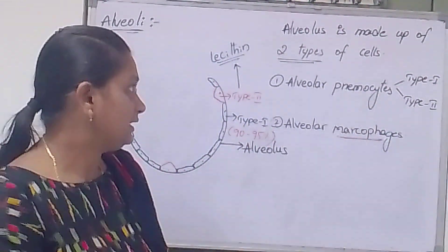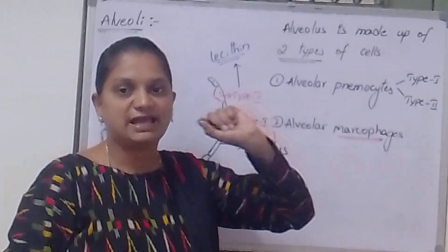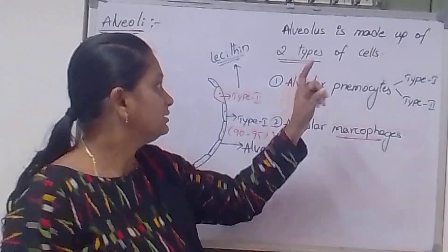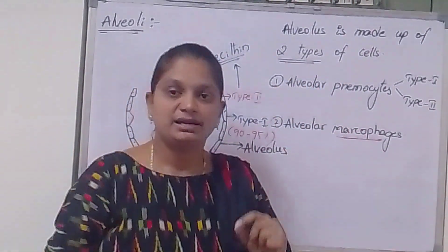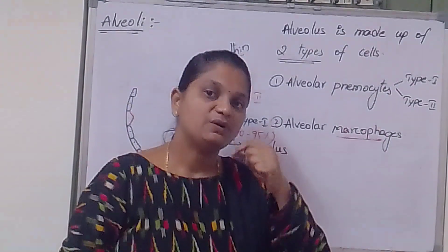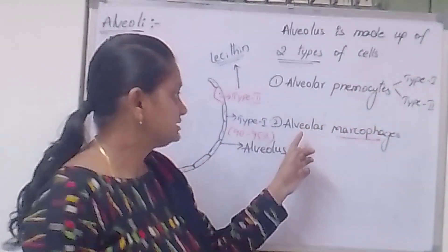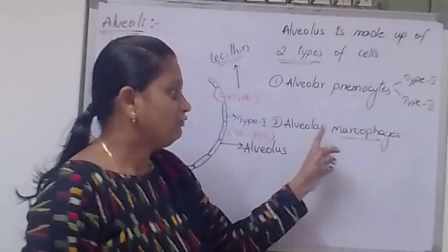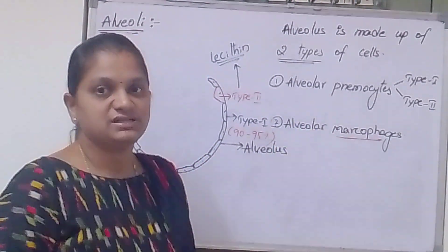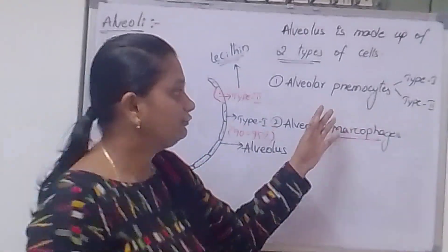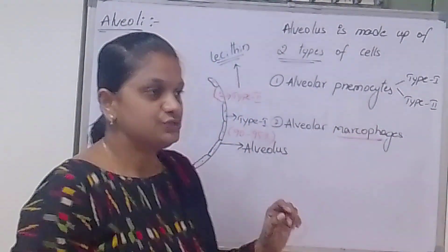The wall of the alveolus is made up of two types of cells: alveolar pneumocytes and alveolar macrophages. Alveolar pneumocytes are of two types — Type 1 and Type 2.